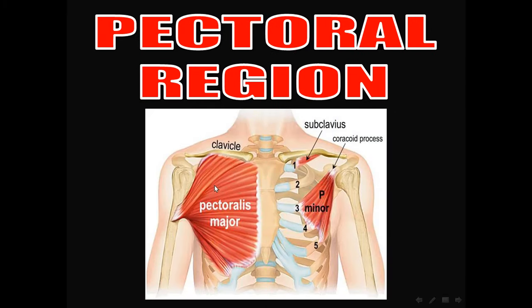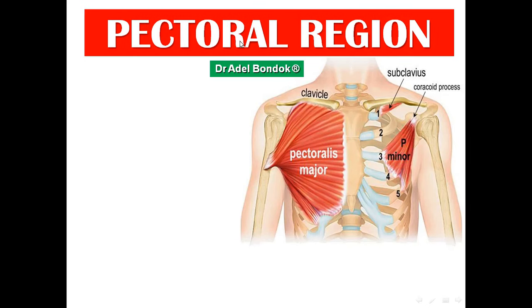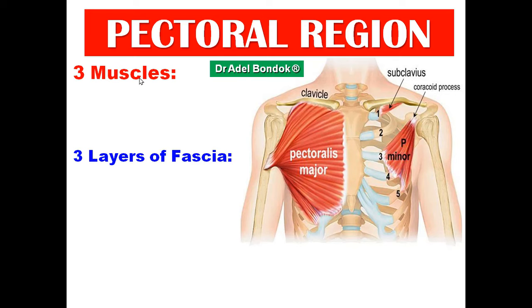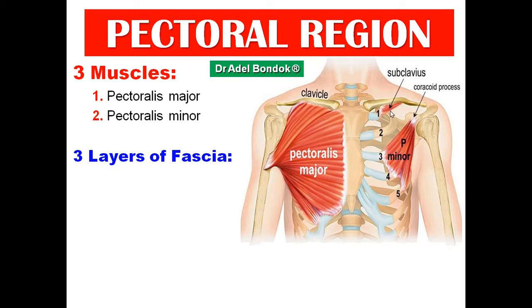Now we start with the pectoral region, which contains three muscles and three layers of fascia. The three muscles: the anterior layer is the pectoralis major; the posterior layer is formed of two muscles — pectoralis minor and subclavius.